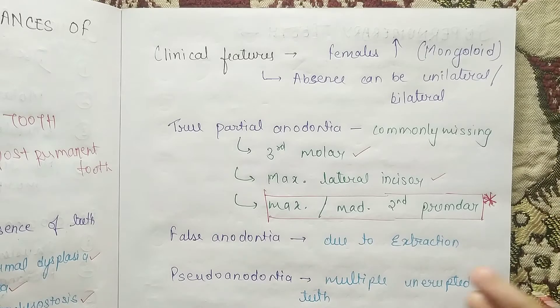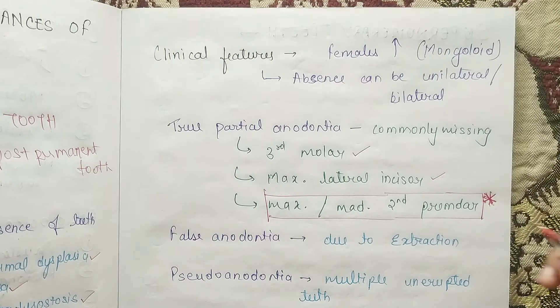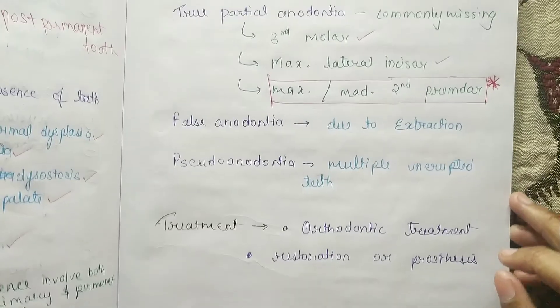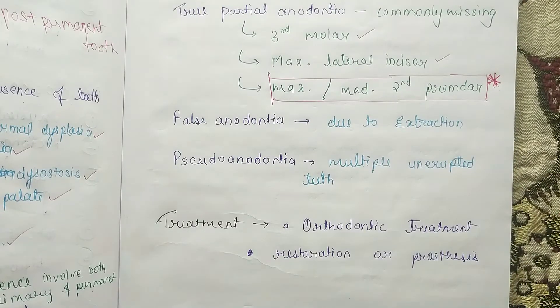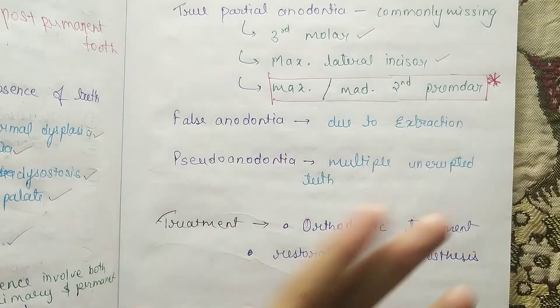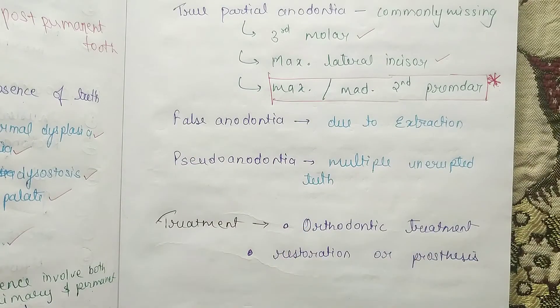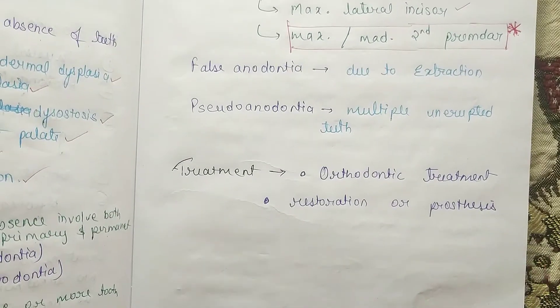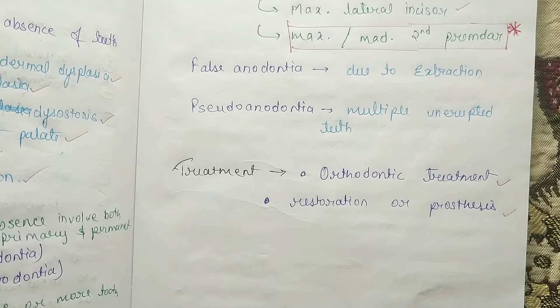Remember: false anodontia is due to extraction, and pseudo anodontia involves multiple unerupted teeth. Coming to the treatment — you can do orthodontic treatment, restoration, and prosthesis. This is all about anodontia.